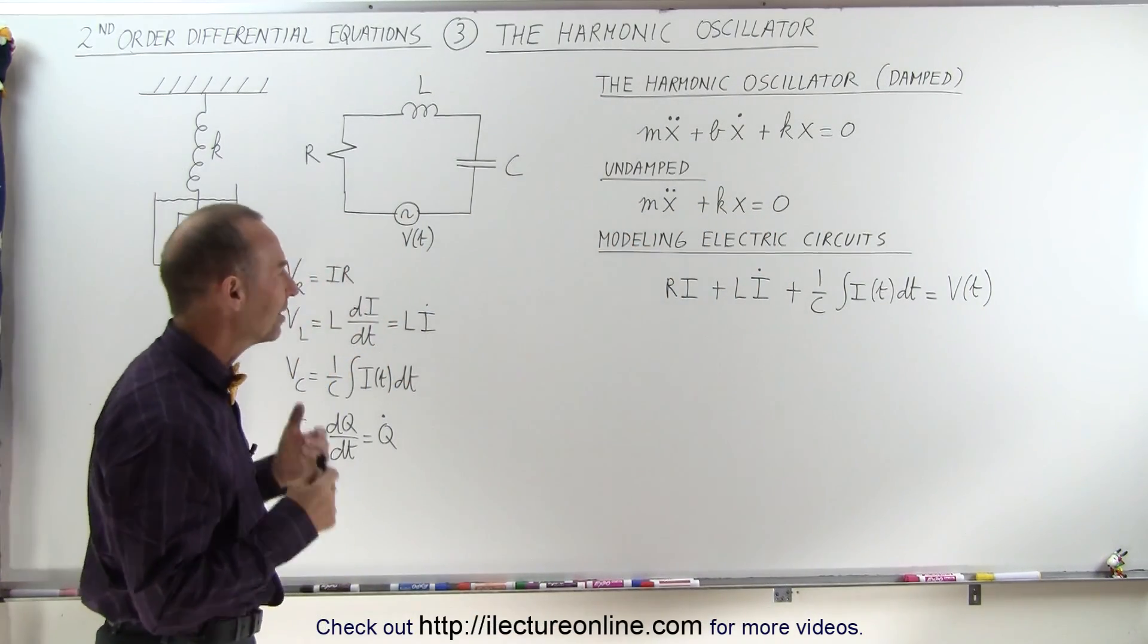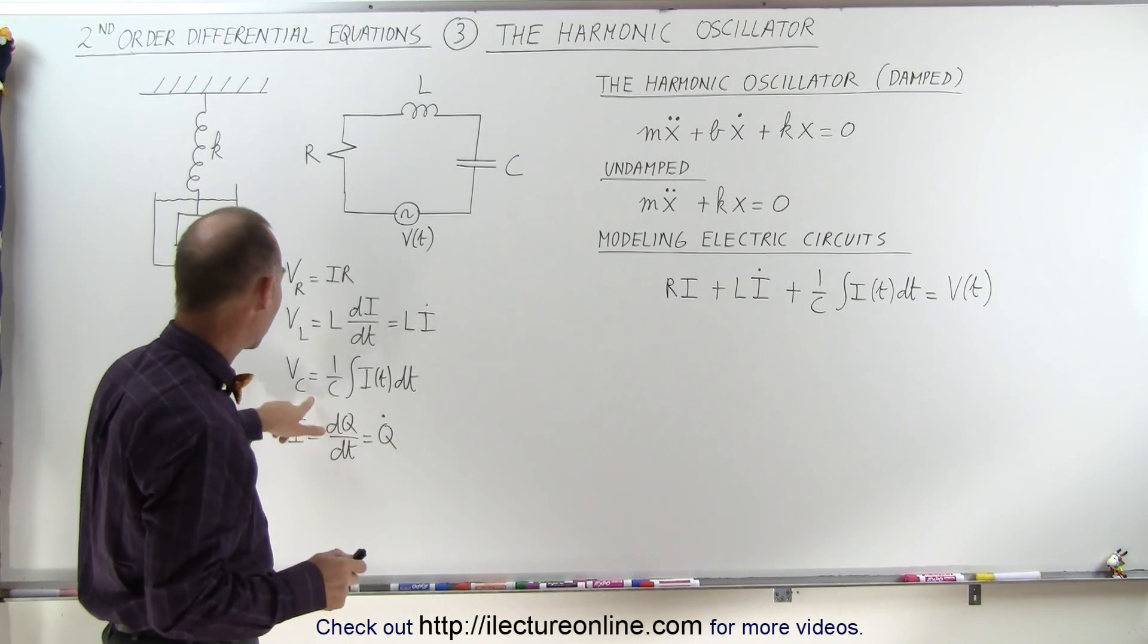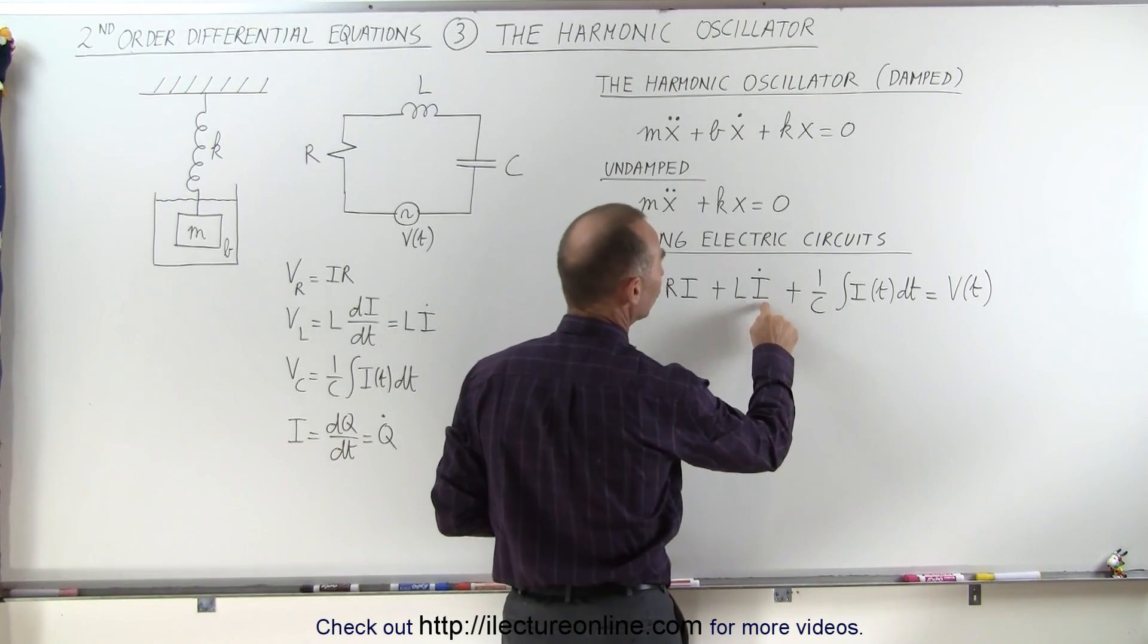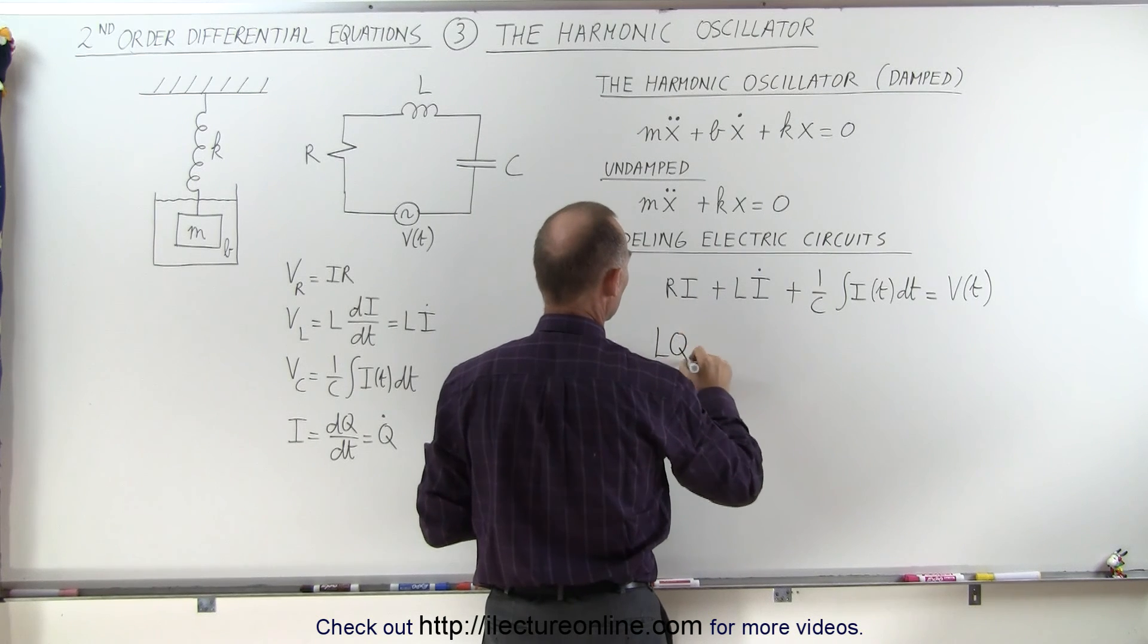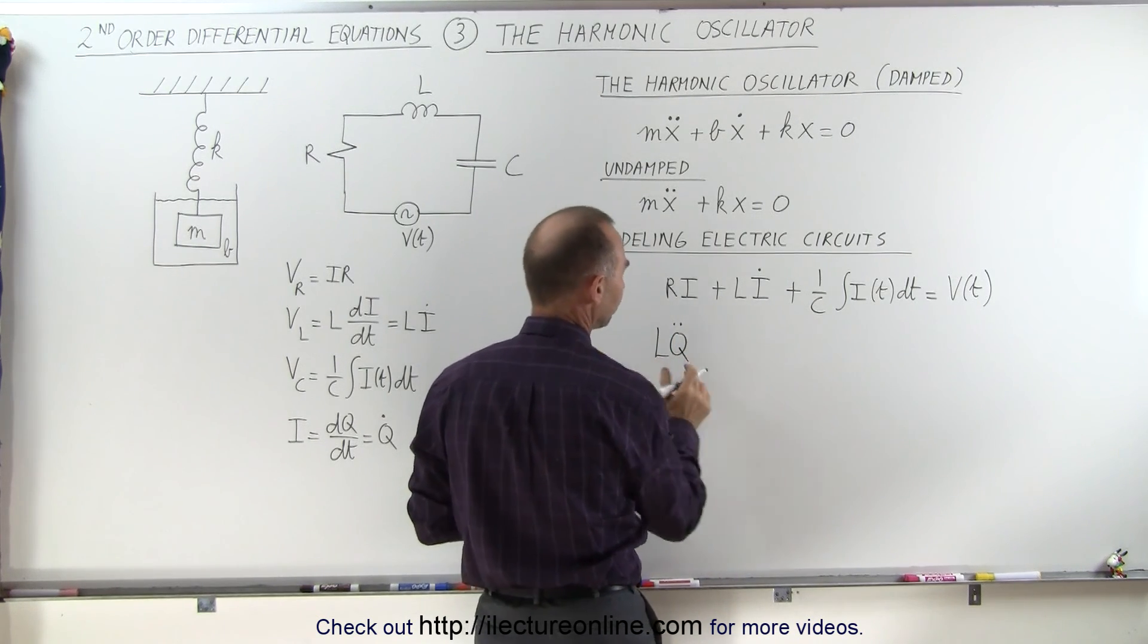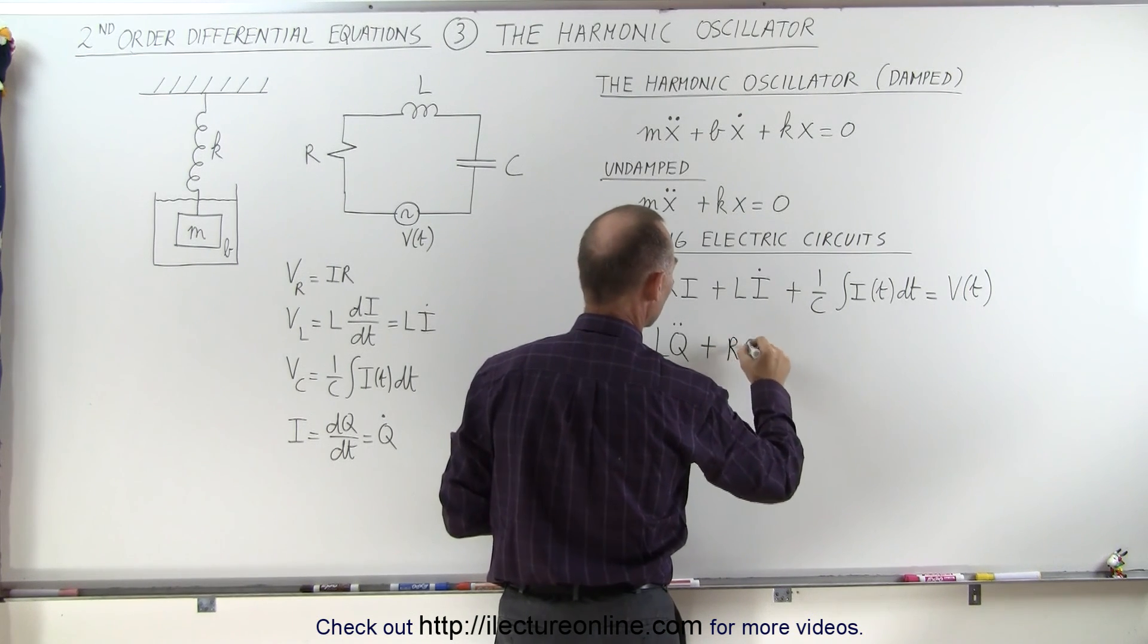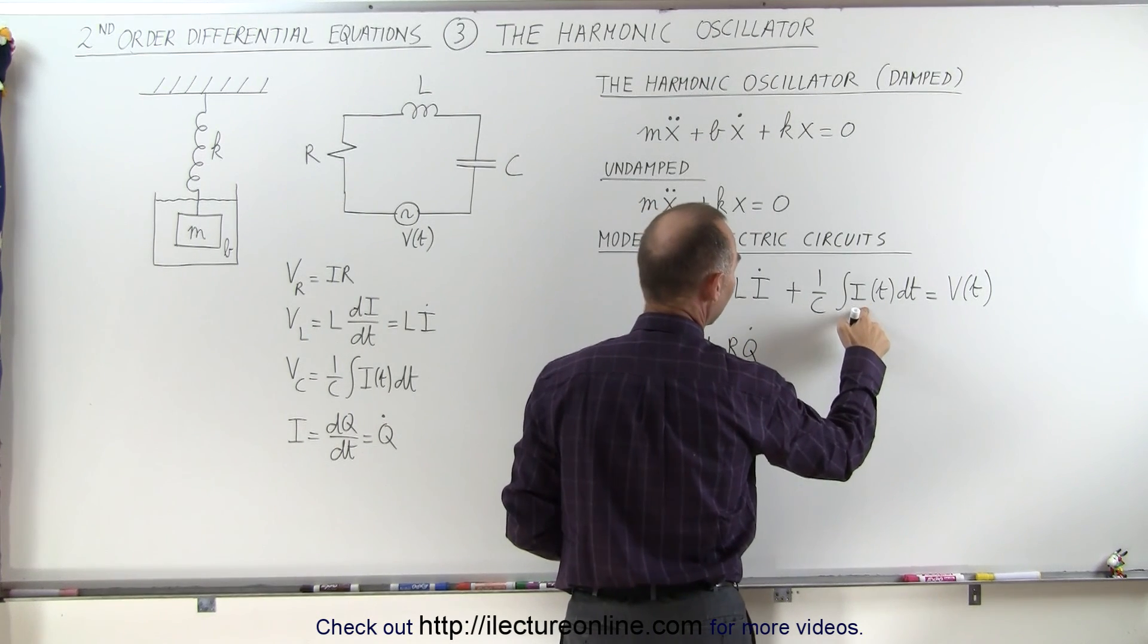Now, if we want to write that slightly differently, we can write it in terms of q. Remember that I is q dot, and so I dot is q double dot. So we can write this as L times q double dot, which is the voltage across the inductor, plus R times q dot, because I is the same as q dot right here.